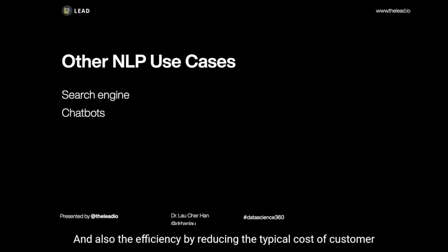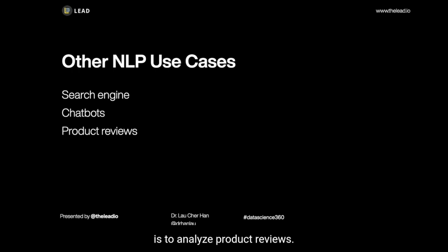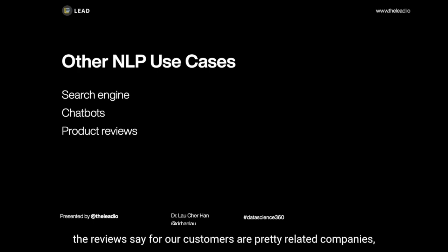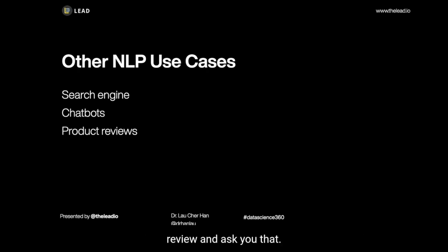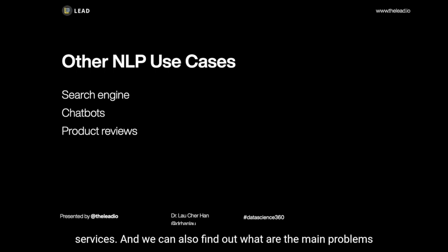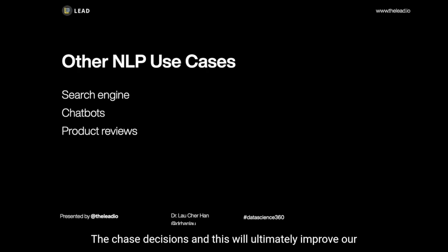Reducing the typical cost of customer service is the ideal scenario of implementing chatbots properly. We haven't seen many really good examples, so there's still quite a lot of opportunity there. Next is analyzing product reviews. If you apply text analytics in the service industry — for hotel customers, product-related companies, e-commerce sites, or really any service industry — this allows you to analyze reviews at a scale that's difficult to be performed by humans. You can quickly identify and fix issues with your products and services, and also find out what the main problems are that prevent people from making purchase decisions, ultimately improving your business processes.